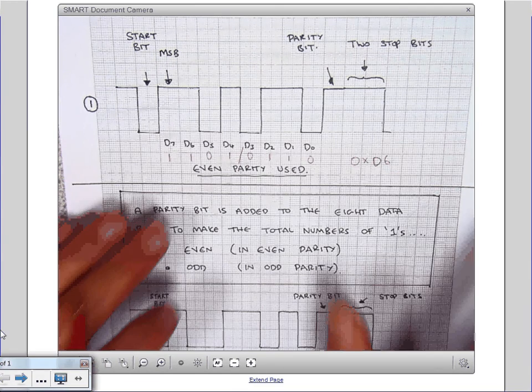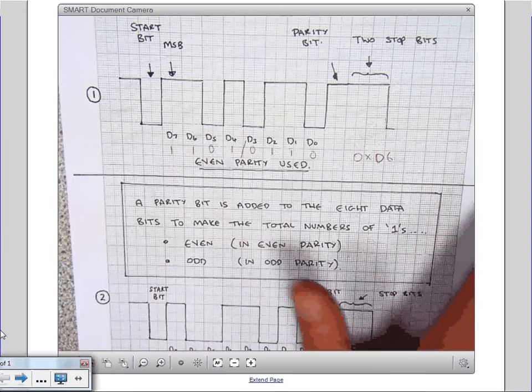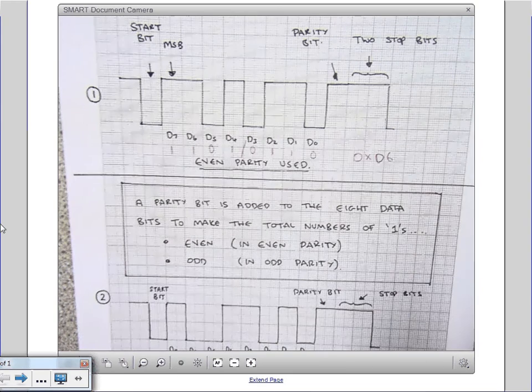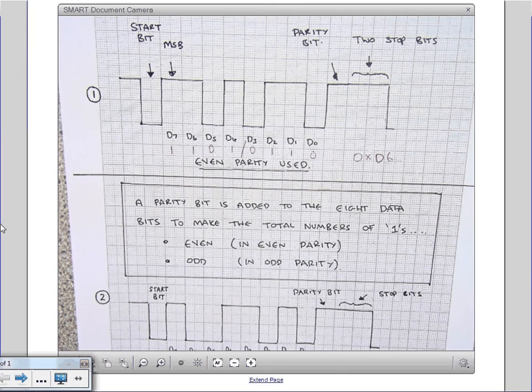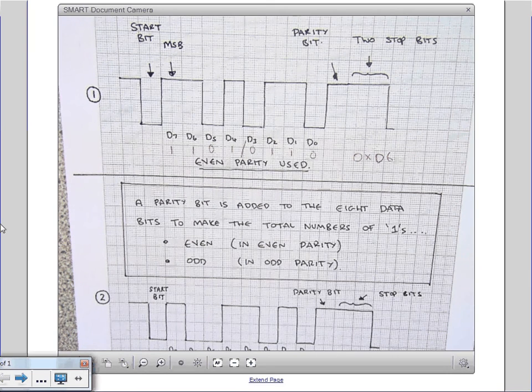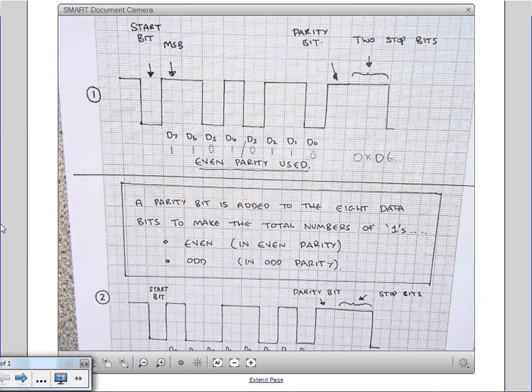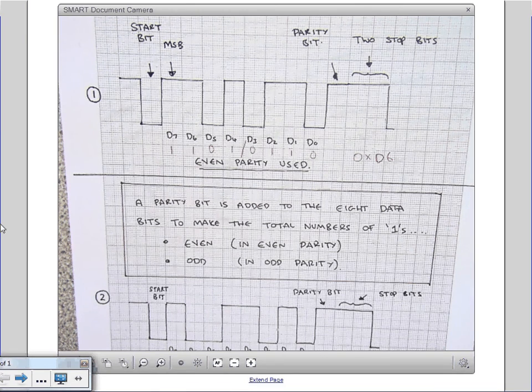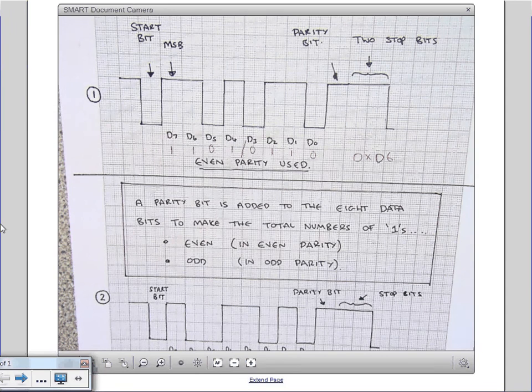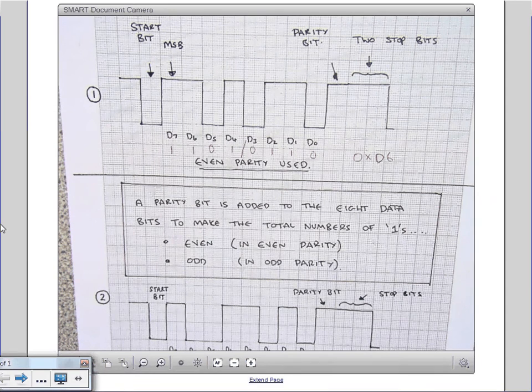So when you're transmitting serial information, bits one at a time and the receiver and the transmitter are not synchronized, it's important to tell the receiver when your byte of information is starting and when it's finished. Otherwise, the receiver will just receive a stream of bits and won't know which bits are part of one byte.